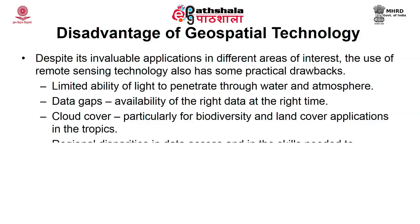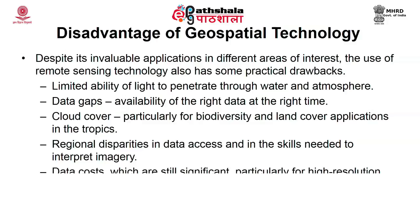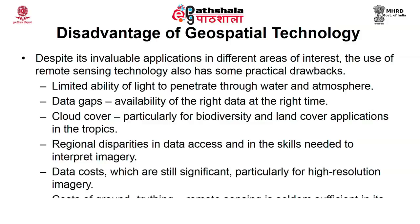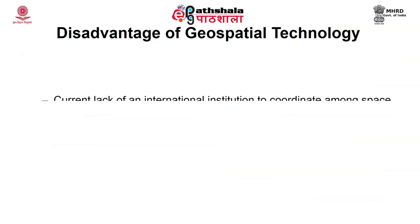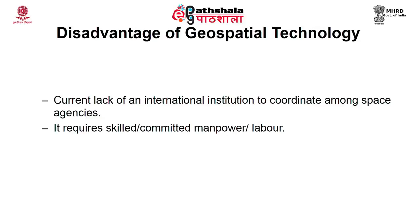Although conventional methods of data collection are essential, they should be supplemented by remote sensing techniques for cost and time efficiency. Despite its significance, there are certain practical drawbacks of geospatial technology. Light has a limited ability to penetrate water and atmosphere, and the processes of absorption, transmission, and reflection reduce the intensity of signals reaching the sensors. There are also data gaps — availability of the right data at the right time is restricted. Cloud cover is a limitation particularly for biodiversity and land cover applications in the tropics. Regional disparities exist in data access and the skills needed to interpret images. Data cost, although reduced over ground survey methods, is still significant for high-resolution images. The cost of ground truthing cannot be eliminated entirely, and there is a current lack of international institutions to coordinate among space agencies. Interpretation and analysis of geospatial data also requires skilled and committed manpower.